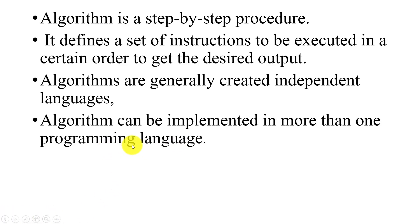There are a number of programming languages, and each programming language uses the algorithm — it follows the steps of instructions — that's why algorithms are generally created independent of languages. For example, suppose one has to cook a new recipe. One reads the instructions, follows the recipe steps sequentially one by one, and gets the desired output — a new dish cooked perfectly. Similarly, an algorithm helps to do tasks in a program. Before writing a program, we have to write the algorithm to get a better solution.